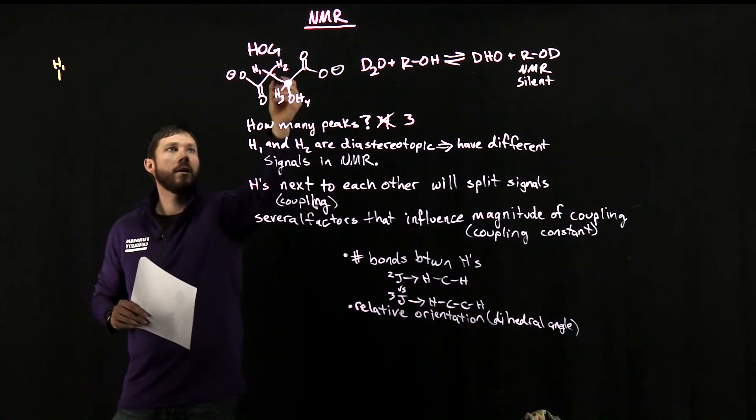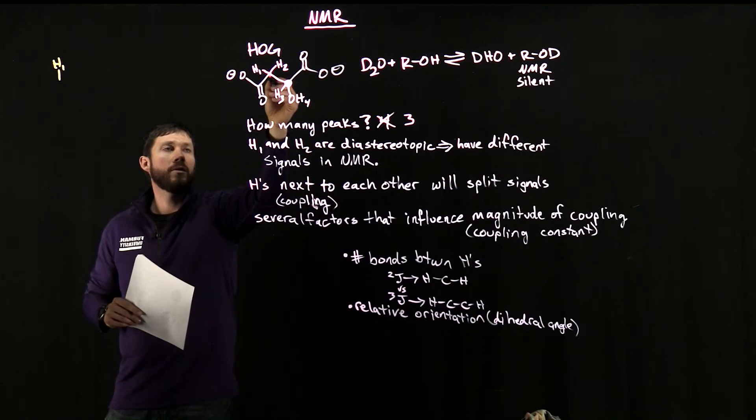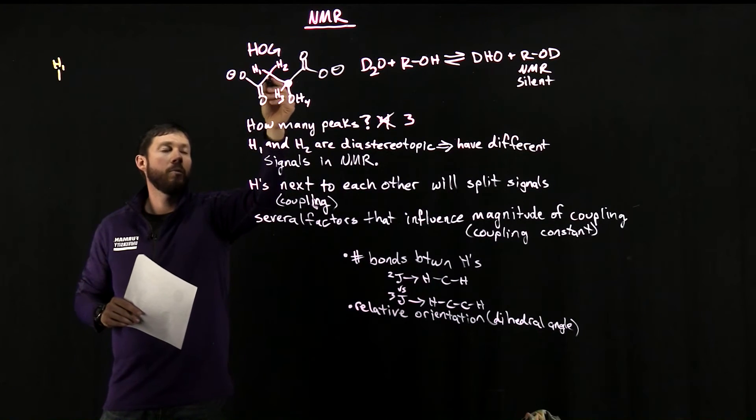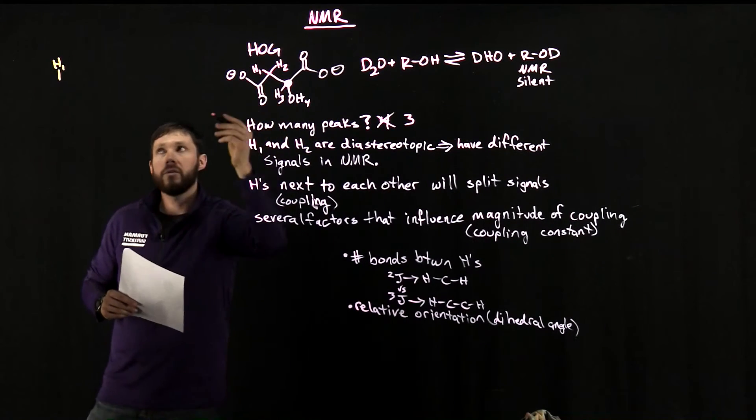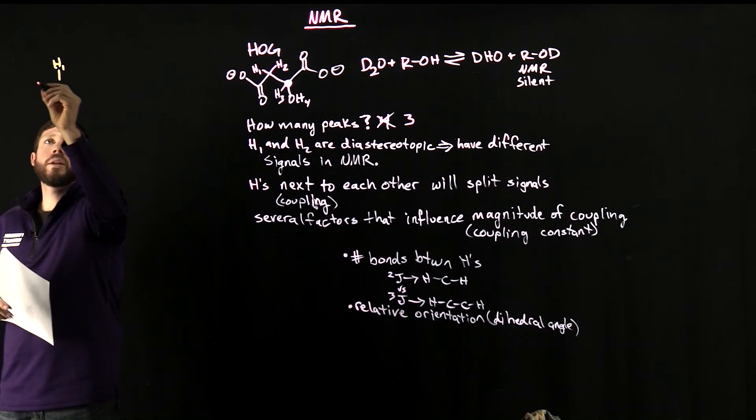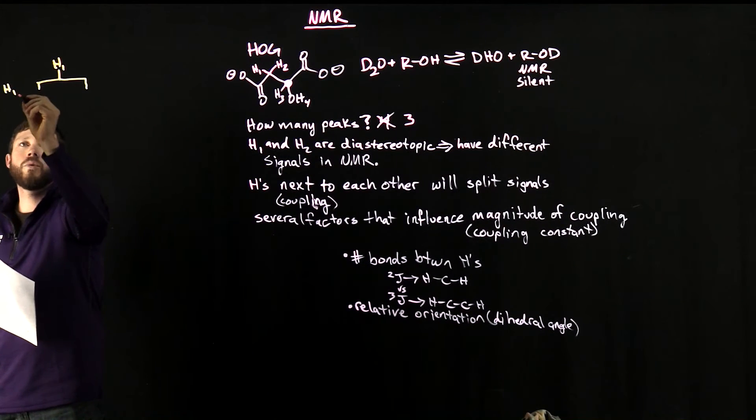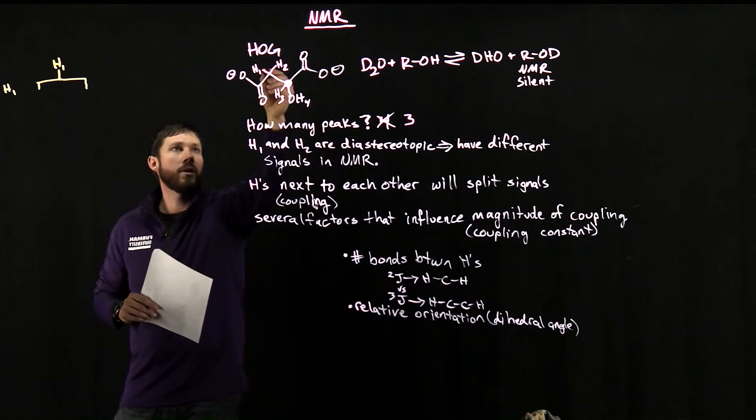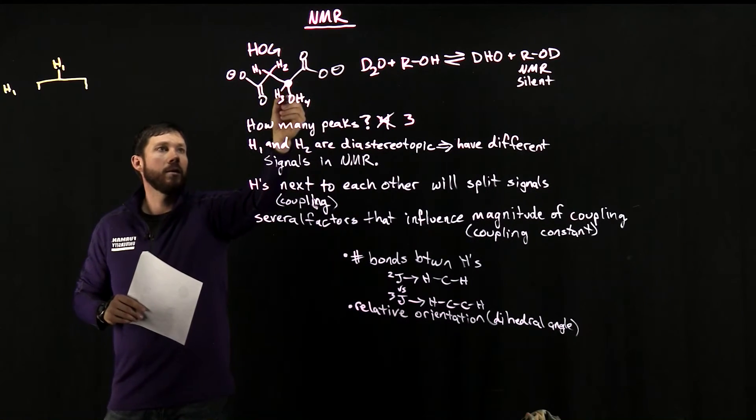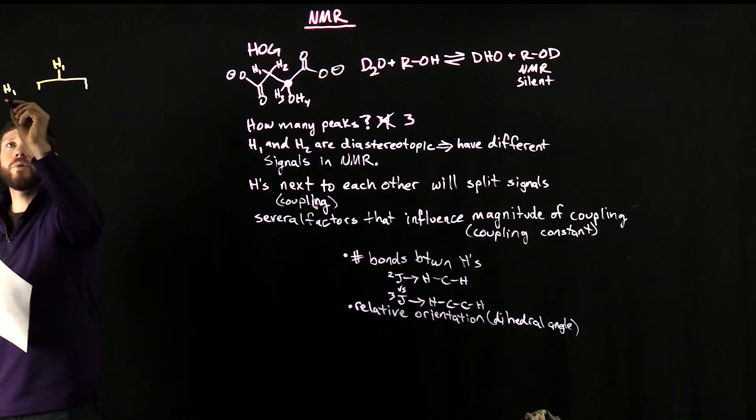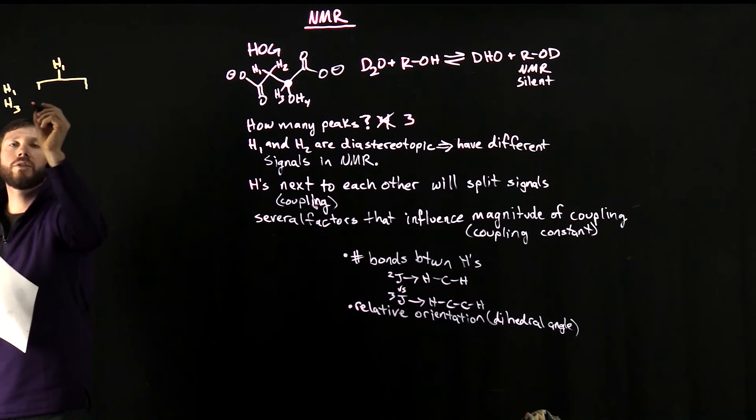So we see that H2 is bound to the same carbon. And we know because they're diastereotopic, they're going to split each other, and they're different. So this first splitting of some magnitude is going to be due to H2. And H1 is also coupled through J3 coupling to this H3 proton. So we'll get further splitting due to H3.